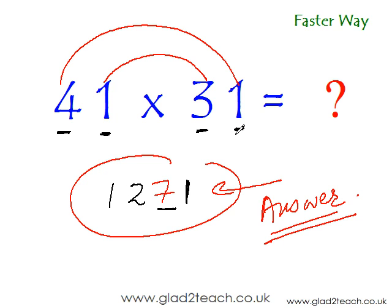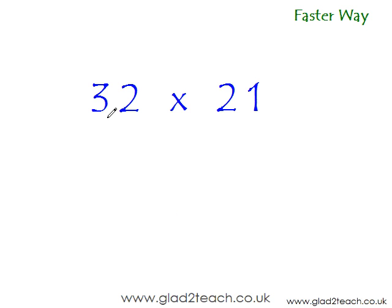Now you have to do the next question. Quickly find out what is 32 times 21.